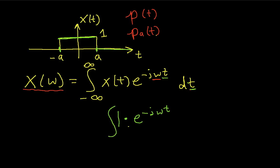That means that my upper limit here will be a. And for values of t less than negative a, x(t) is 0, which means that the integrand from minus infinity to negative a will also be 0. So I can write this whole integral as the integral from negative a to a, 1 times e to the minus j omega t dt.